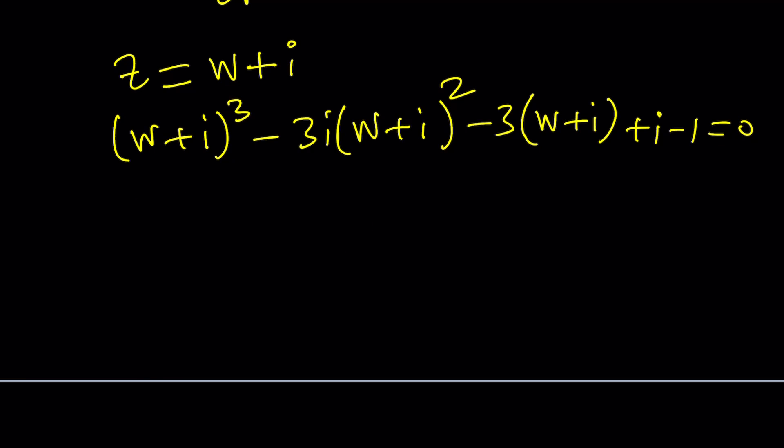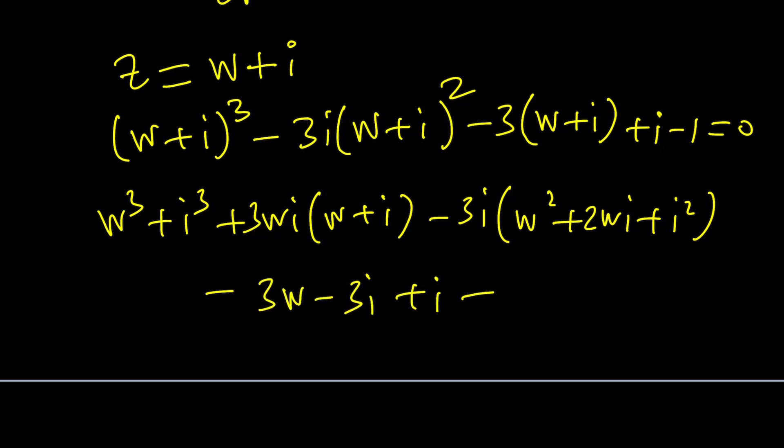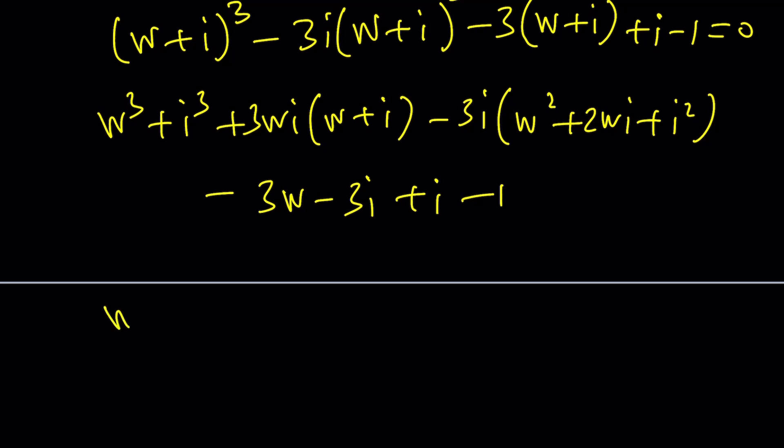So now we're going to go ahead and expand it one more time. W cubed plus I cubed plus 3Wi times W plus I. And then minus 3I times W squared plus 2Wi plus I squared. And then the rest is going to be negative 3W minus 3I plus I minus 1. Okay. Let's go ahead and simplify this now.